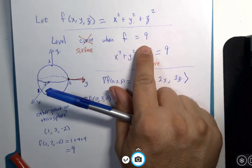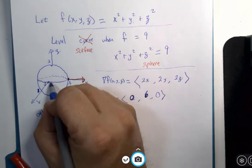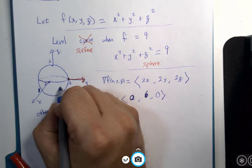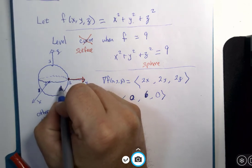That would be on my level surface. So, 1, 2, negative 2. It might be like right down here, southern hemisphere.